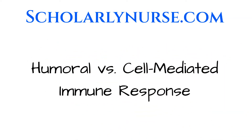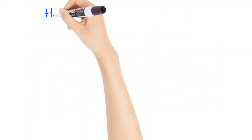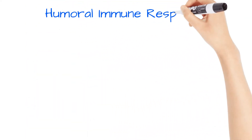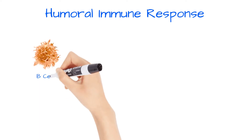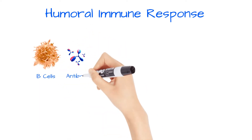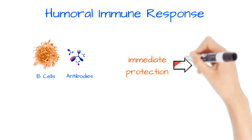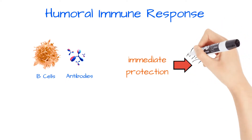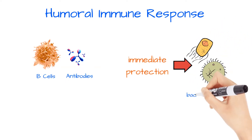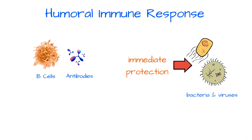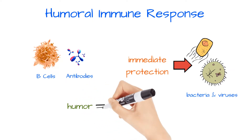Welcome to the video on humoral versus cell-mediated immunity. The humoral immune response is all about the B cells and antibodies. Its main function is to provide immediate protection against many bacteria and viruses, since antibodies are produced from plasma cells. This is why this type of immunity gets its name — the Greek word 'humor' refers to body fluid.